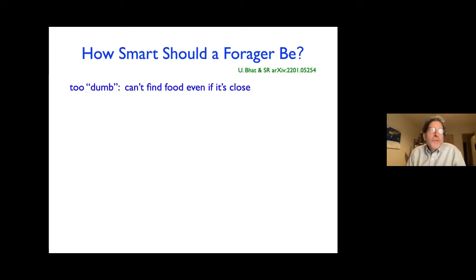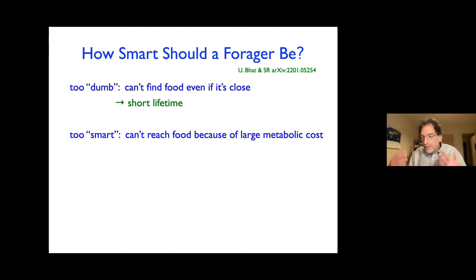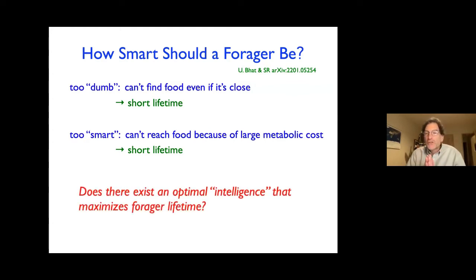So the idea behind this project is very simple, which is: imagine that you are a forager looking for food in some resource-depleted environment. And if you're too stupid, well, food could be nearby, but you don't even find it. And that means that you'll die of starvation fairly easily. So if you're too stupid, your lifetime is likely to be short. On the other hand, if you're too smart for your own good, you might be able to see food that's very distant from you, but you have a large metabolic cost in locomotion and in sensing the food. And because of this high metabolic cost, it's possible that you could also not live a very long time. And so the question is, is there an optimal value of intelligence that maximizes the forager lifetime? So that's the basic goal of this talk.